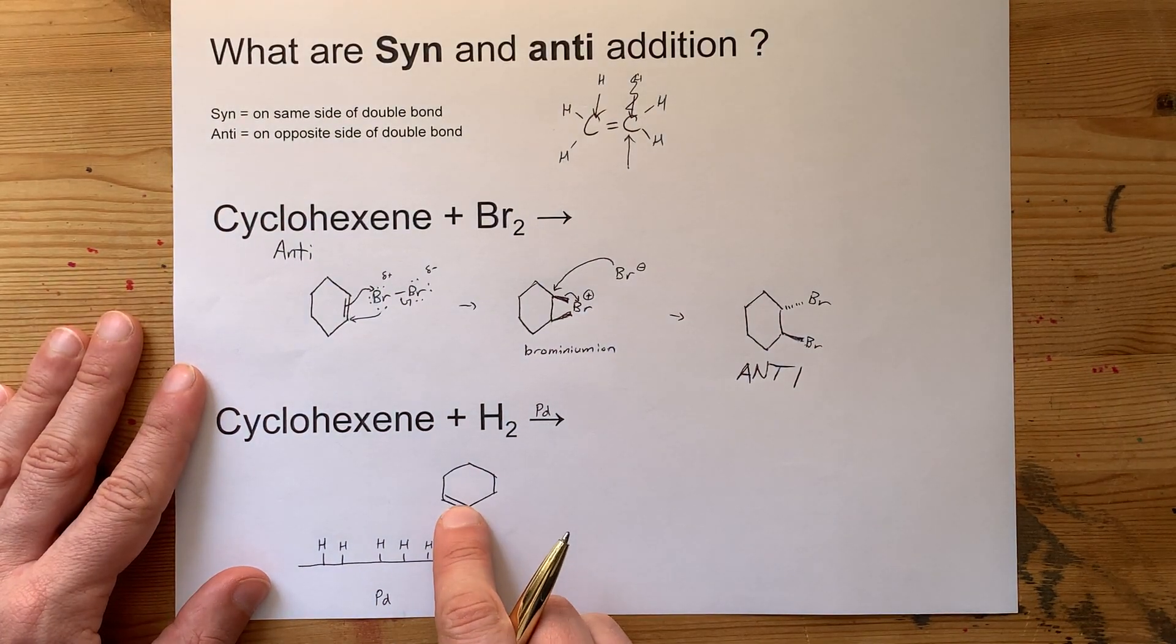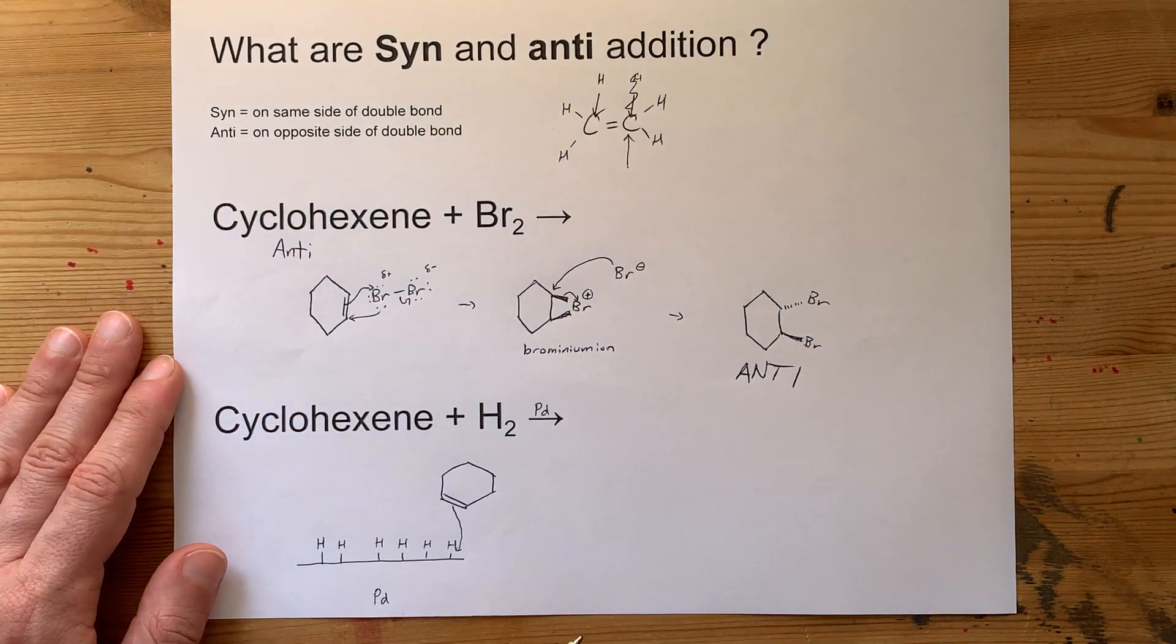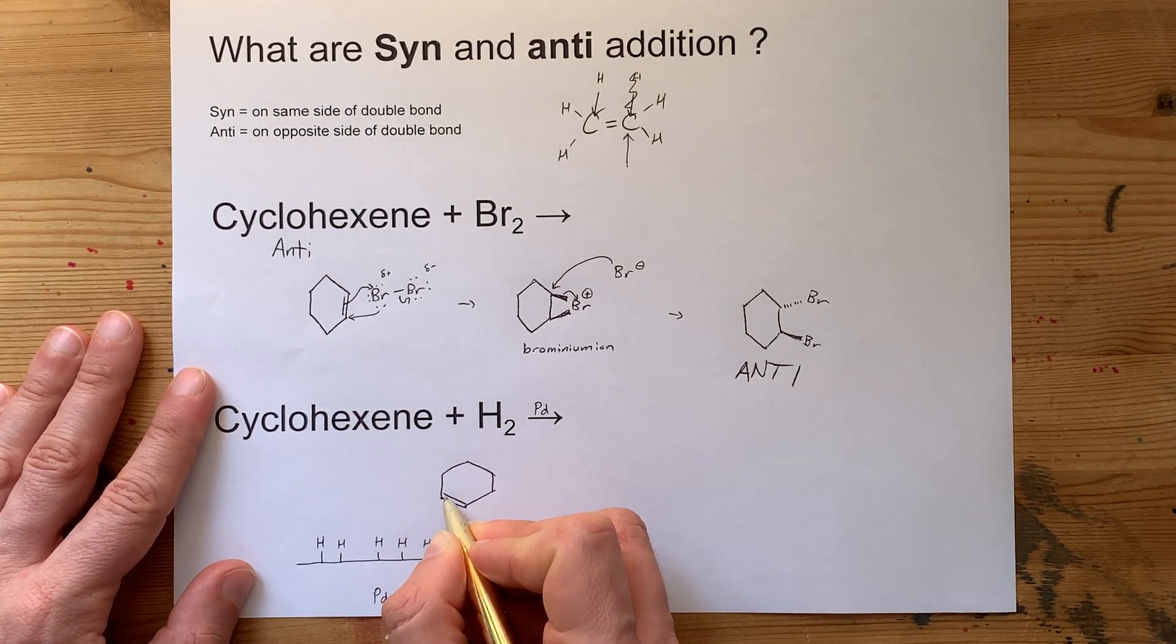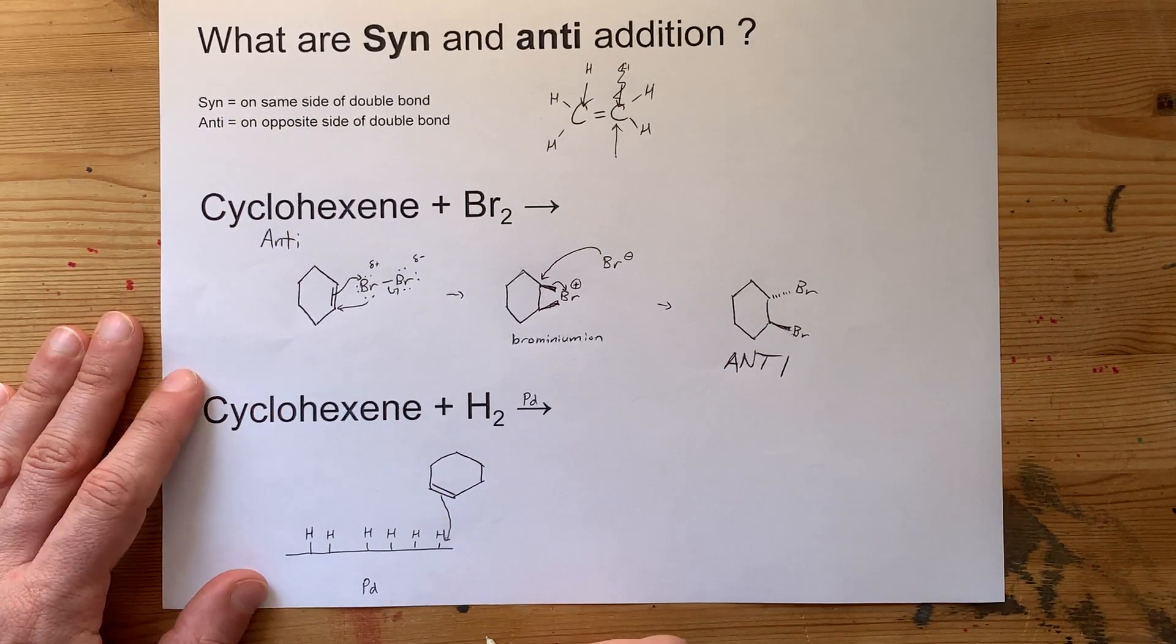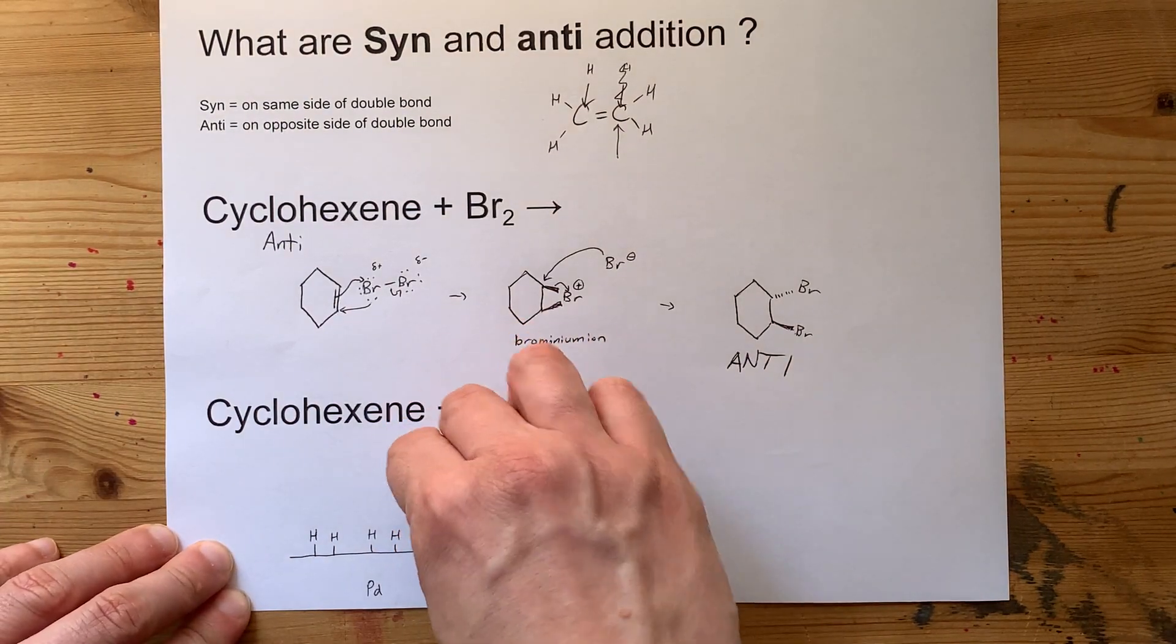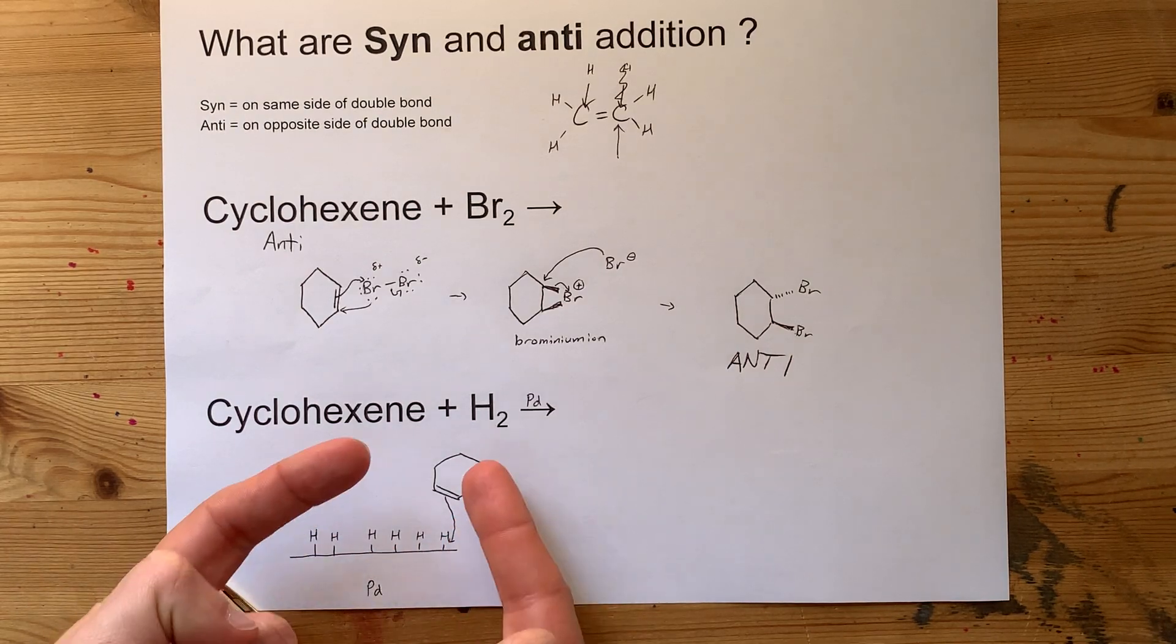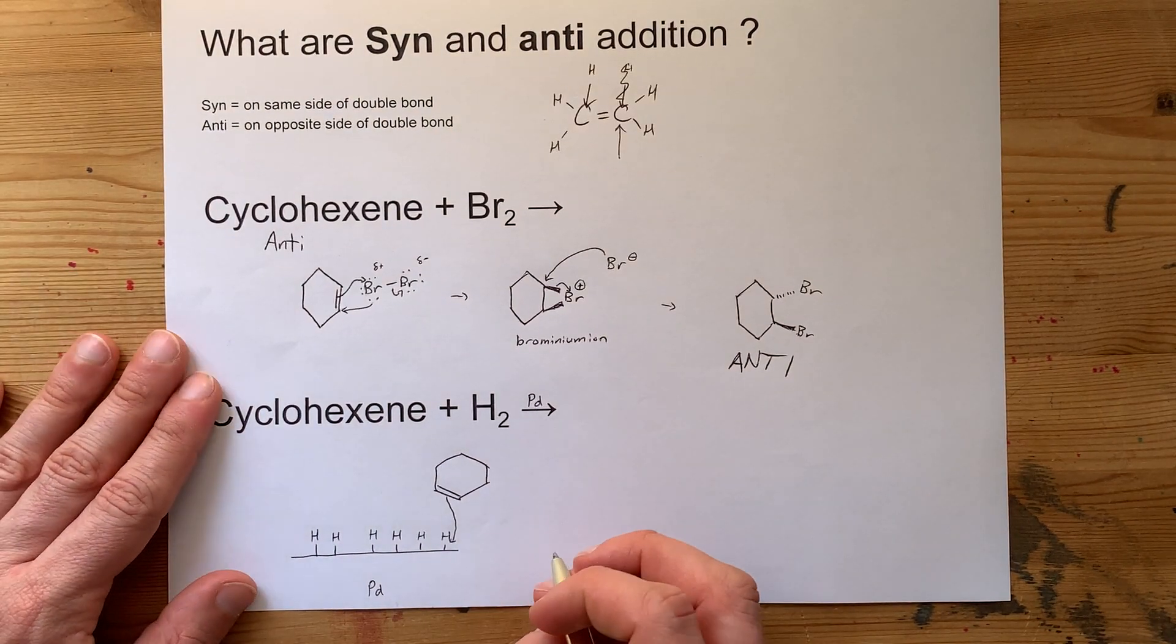The double bond breaks, pop, pop, pop, H comes off. The other carbon atom that's left with a slightly positive charge has to grab the other hydrogen atom. And you end up, I don't know, it's kind of like that hexagon rolls down onto the catalyst. Both of those H's are coming from the same direction because they're both attached to the same flat catalyst.